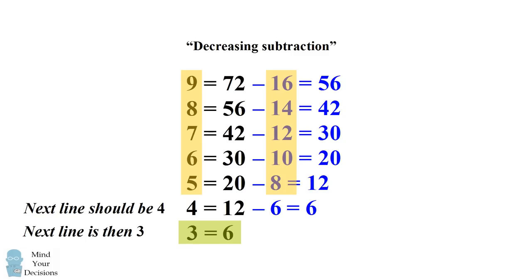So once again we figured out that 3 equals 6 and the answer is 6 by the very same decreasing subtraction method. The only thing we had to do is we had to add the missing line of 4 equals 12.